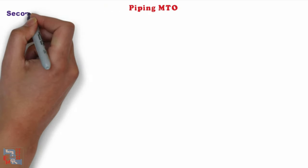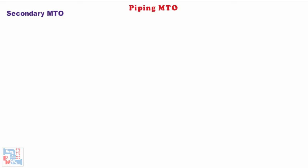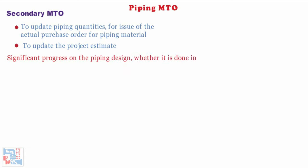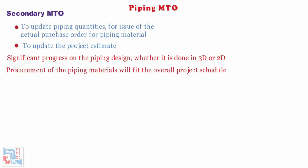Now comes secondary MTO. There are basically two reasons for doing a secondary piping MTO: first, to update piping quantities for issue of the actual purchase order for piping material; second, to update the project estimate. The secondary piping MTO is done when there is significant progress on the piping design, whether in 3D or 2D. It must be done early enough to ensure that procurement of piping materials fits the overall project schedule.